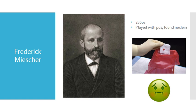Frederick Meischer is probably one of my favorite scientists. He literally took dirty bandages out of the trash and used the pus from those dirty bandages for his studies — one has to wonder if this required informed consent. Meischer was actually smart to use the pus, because pus is made up of white blood cells, which have a nucleus — unlike red blood cells. From this nucleus, Fred was able to isolate a compound he called nuclein. At the time, scientists thought nuclein functioned as a storehouse for phosphorus, but today we know he was likely working with nucleic acids — he was really the first one to isolate what we now call nucleic acids.